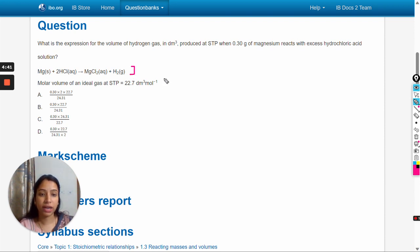Some additional information is also given. This says that molar volume of ideal gas at STP is 22.7 decimeter cubed per mole, which means that one mole of gas will occupy 22.7 decimeter cubed at STP - that is standard temperature and pressure conditions.